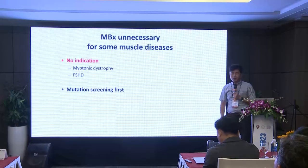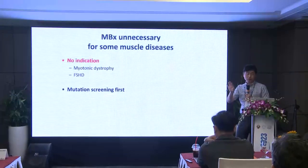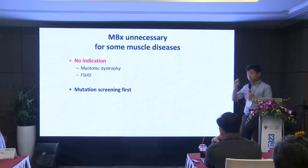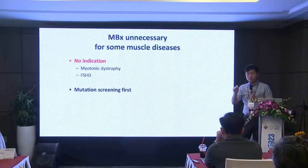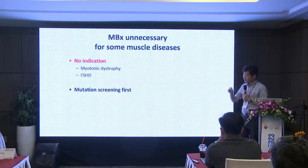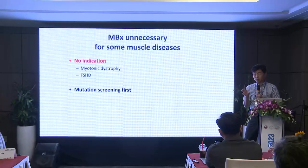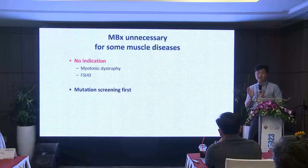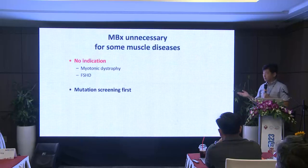FSHD is a very interesting disease. If you look at the patient, some muscles are completely gone but others are almost normal — it's more or less all-or-none. So if you do muscle biopsy from a severely affected area, you will get only fat, no muscle. If you do it from a well-preserved area, you may see nothing — it may even be normal. The clinical features are usually very characteristic, and you should do genetic testing rather than muscle biopsy.